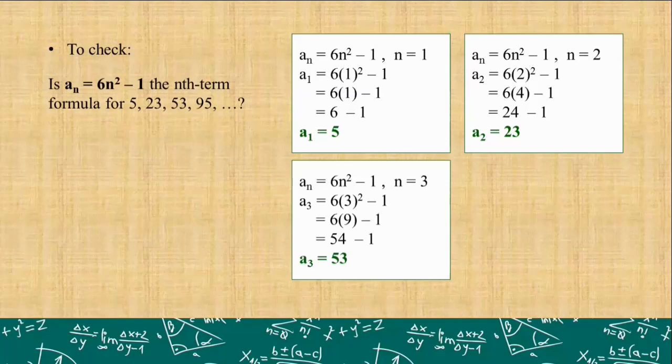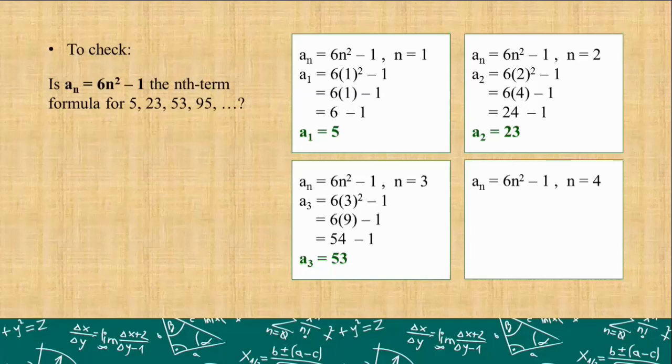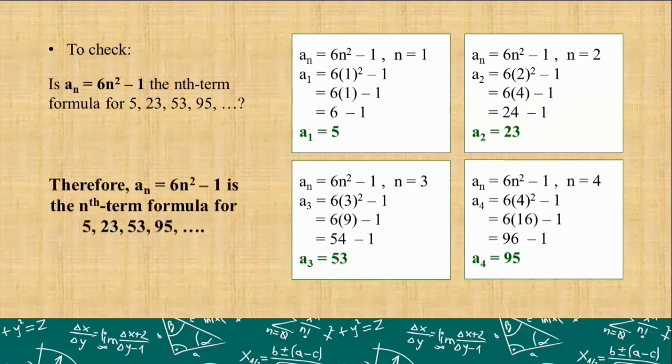And finally, for a₄, again, pause this video and solve for a₄ using this formula. Okay, let's check if it's correct. We have 6 times 4 squared minus 1. 4 squared is 16. Times 6, we have 96. Minus 1 is 95. As you can see, the first 4 terms, when we substituted n equals 1, n equals 2, n equals 3, and n equals 4, all the answers were the terms in our given sequence. So with that being said, our formula aₙ = 6n² - 1 is really the nth term formula for 5, 23, 53, 95, and so on. This is already your final answer.